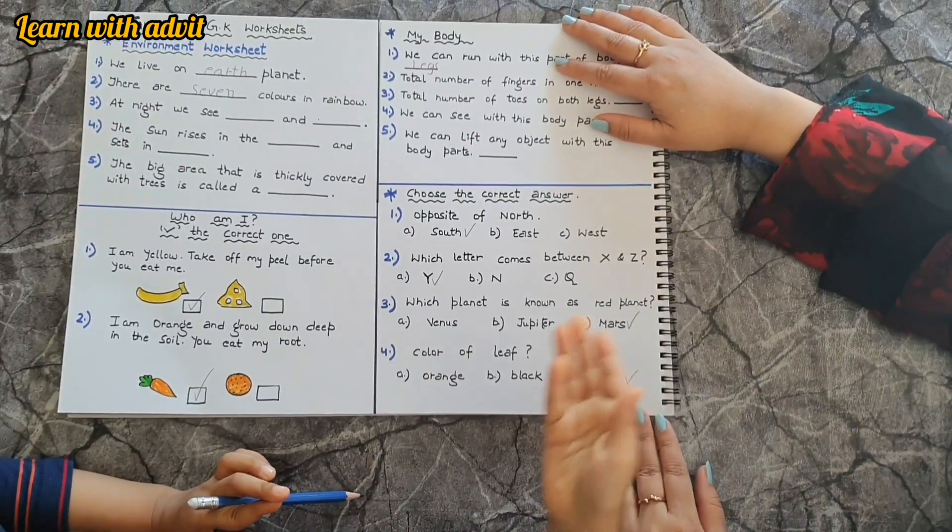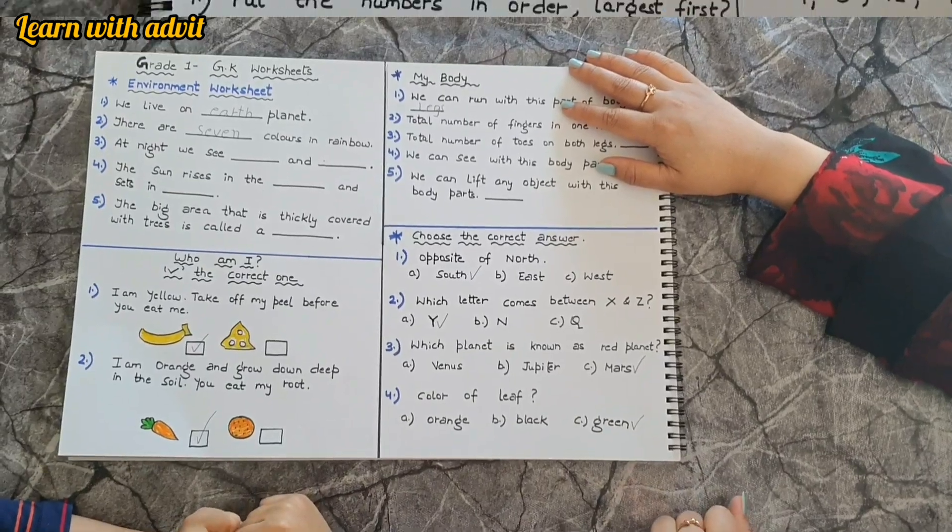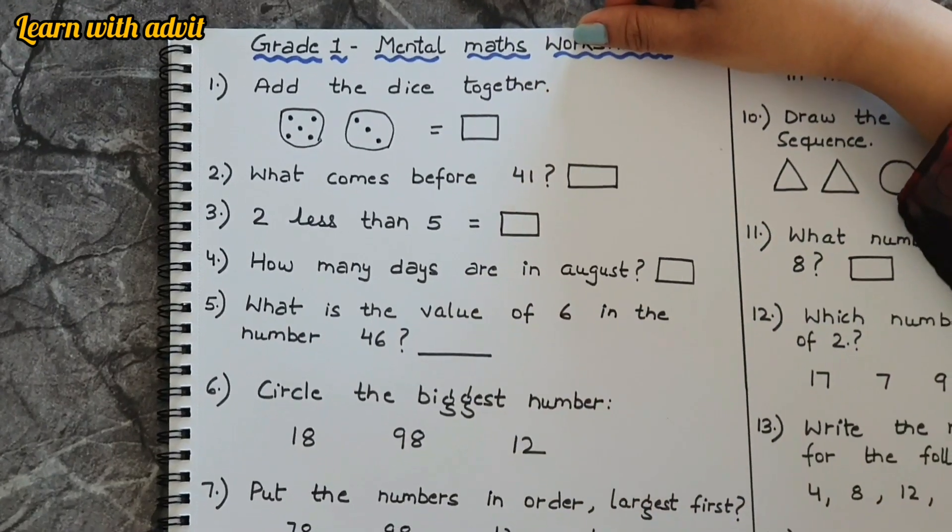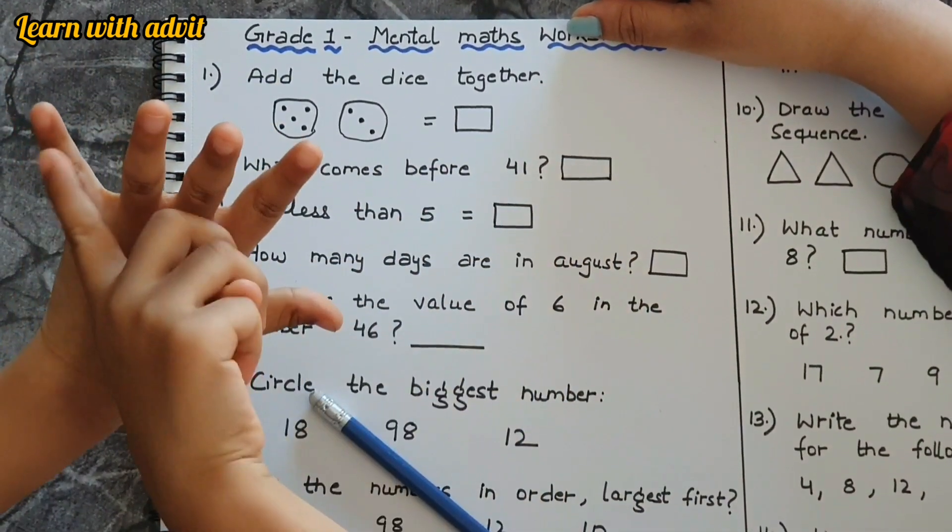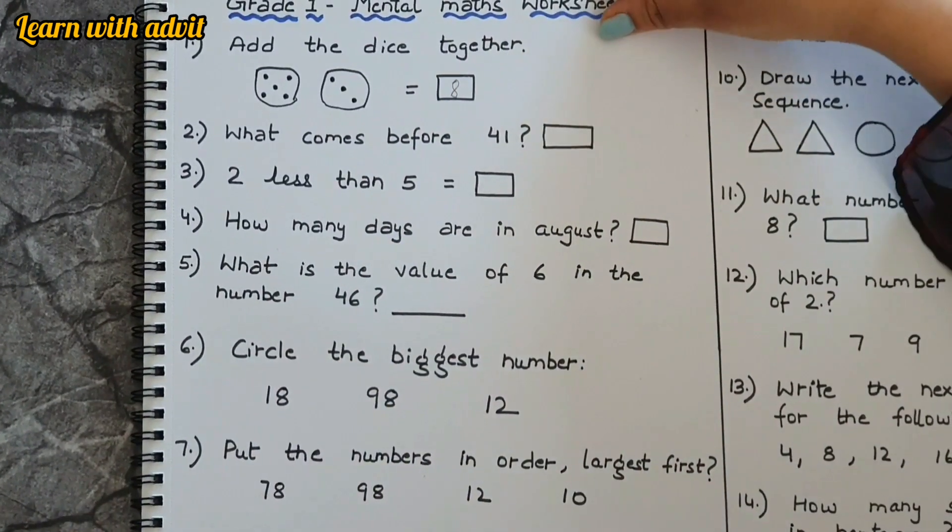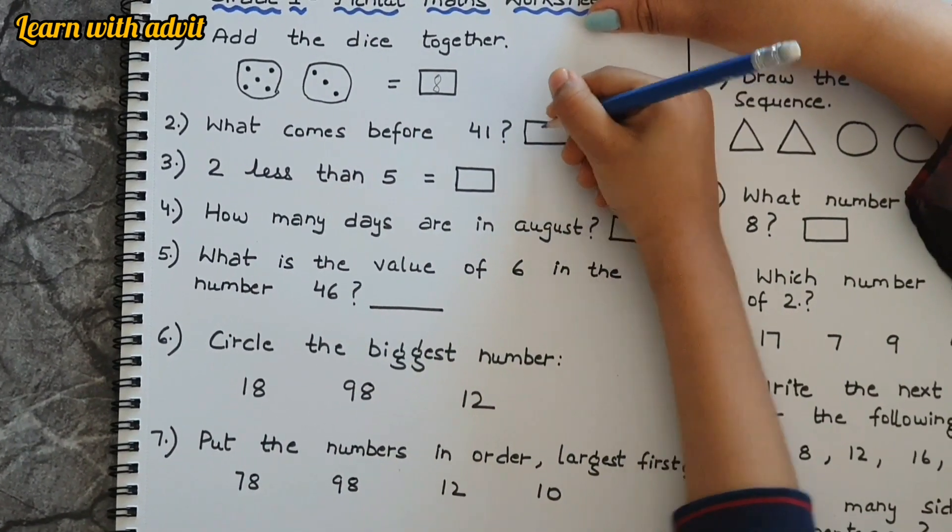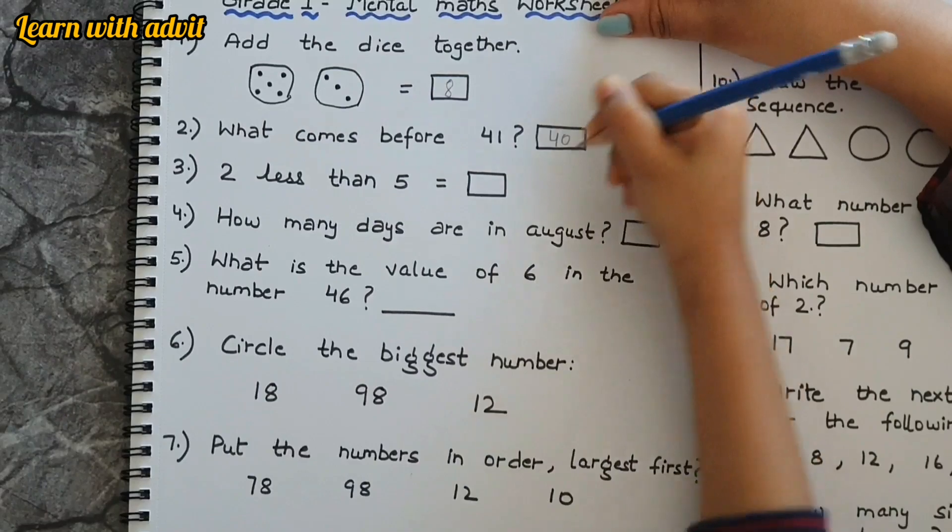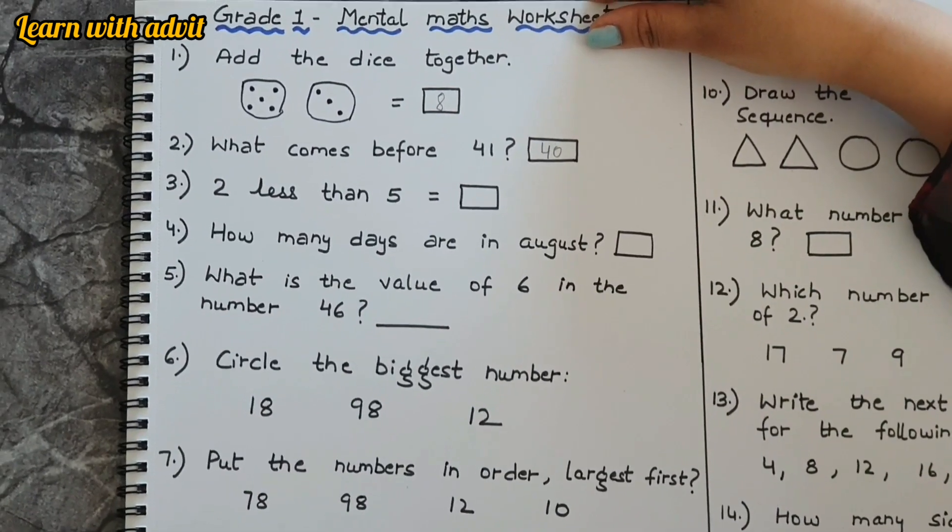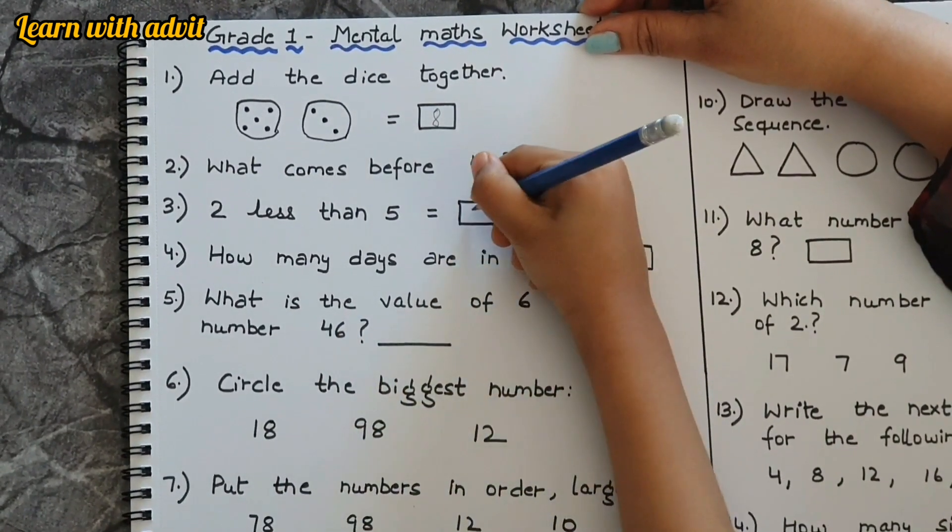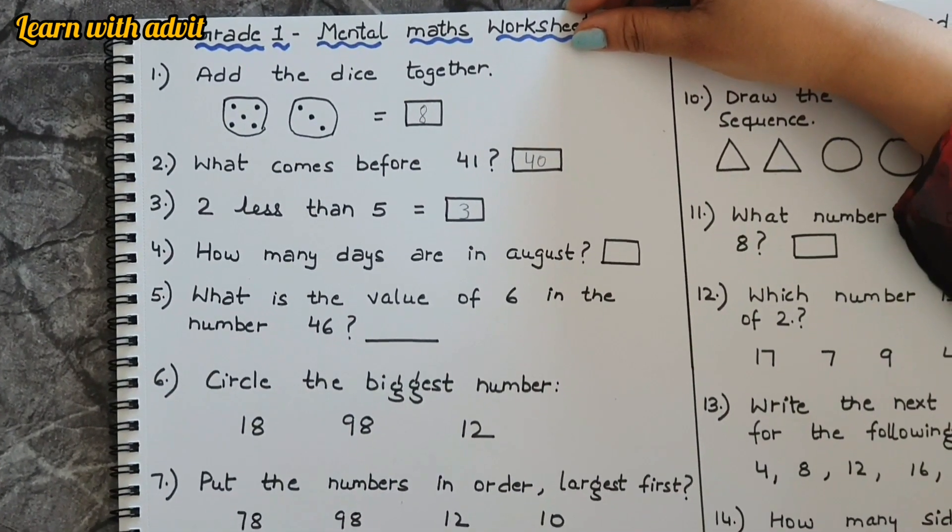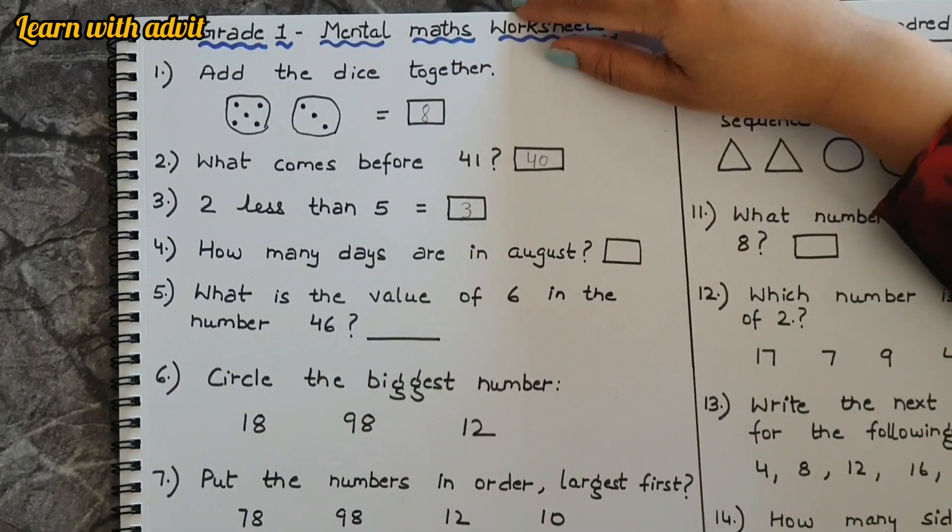So now the mental maths. Add the dice together. Here are the numbers, add it and write it down. Five plus three equals one, two, three, four, five, six, seven, eight. Very good. What comes after 39? 40, very good. Two less than five is three, very good. And three more than five? Five plus three is eight.